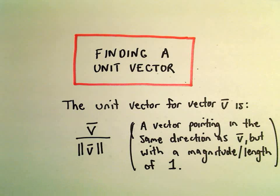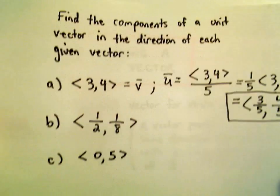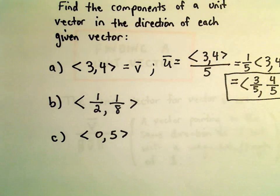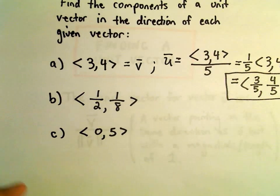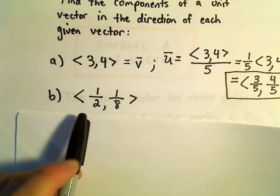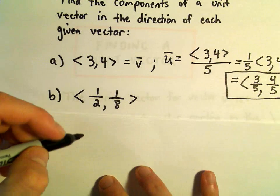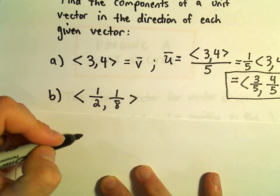Alright, in this video we'll knock out hopefully our other two examples here, finding a unit vector for our given vector. So, part b, we've got a vector that has components 1 half and 1 eighth. Well, this one might be a little more tedious just because of the fractions.